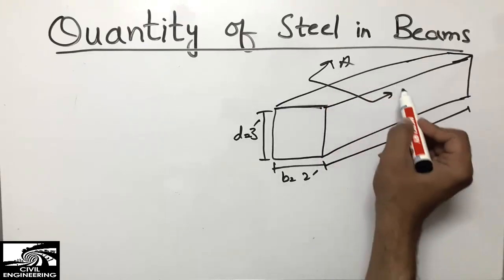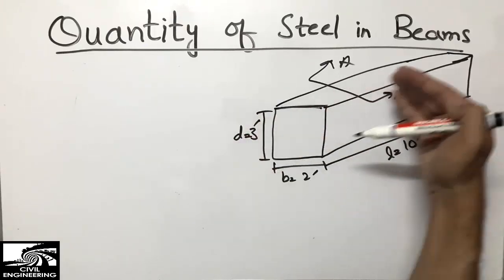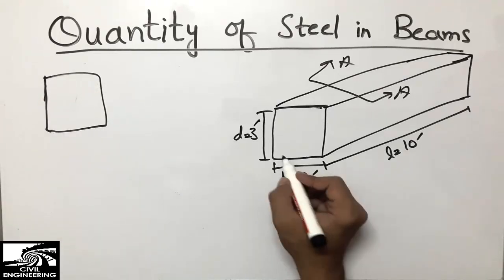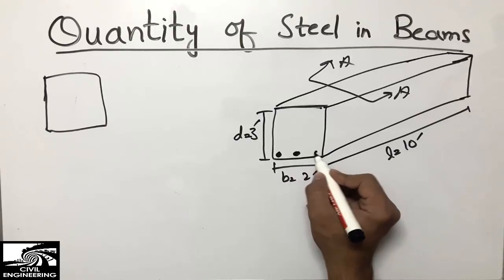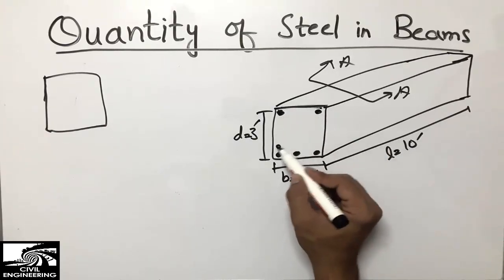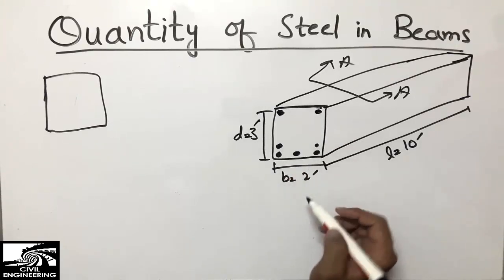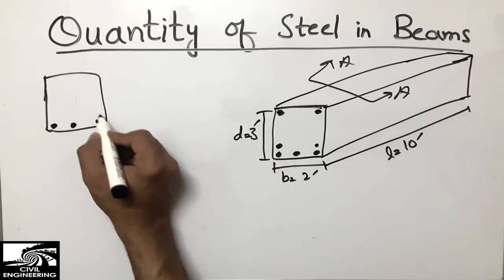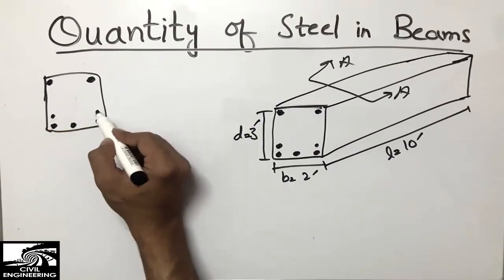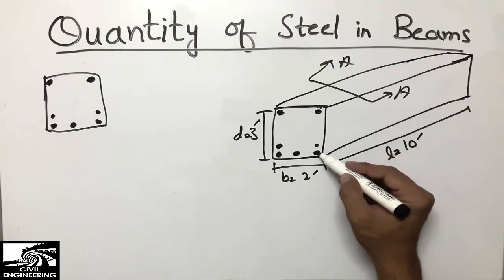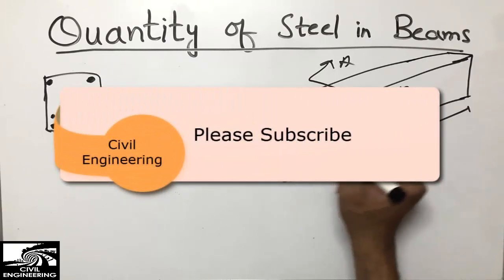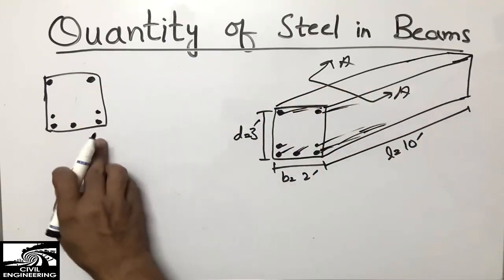The cross-section view of the beam is shown here. If we look from the side, we will see the beam section. There are three bars at the bottom and two bars at the top, plus two other smaller bars. These are the longitudinal bars which run throughout the length of the beam. In cross-section, we see them as dots.